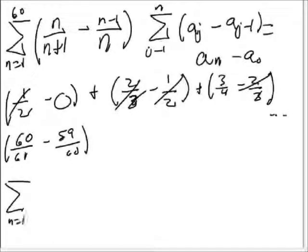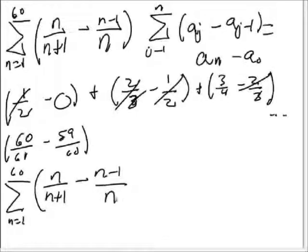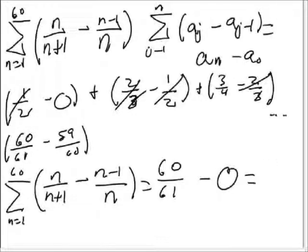So we can calculate the final result using our equation for our telescoping series. So n equals 1 to 60, just in our equation. Just the last term, a_n, 60/61 minus a_0. So a_1 was 1/2, and then a_0 is 0, which is 0. And that's just simply 60/61.